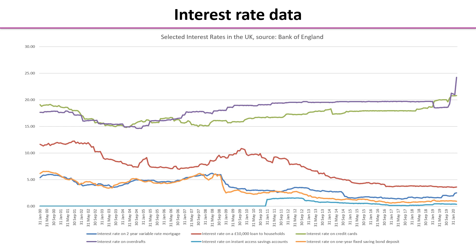Here is some information about different interest rates over time. We can see that the bank rate and the instant access savings account are the very lowest because you can take your money out straight away. Another interesting one is the second from bottom blue line — the variable rate mortgage — again with very low interest rates because the bank owns your house.